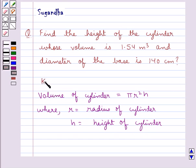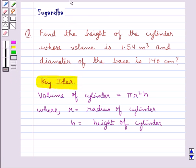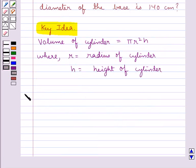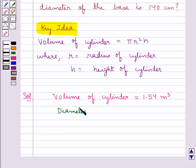This is the key idea for this question. Now let's see the solution. We are given the volume of cylinder is equal to 1.54 meter cube and diameter of base is equal to 140 centimeters.